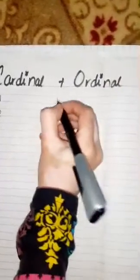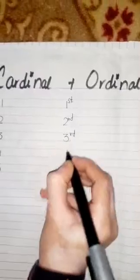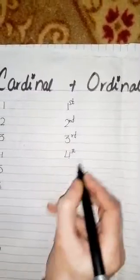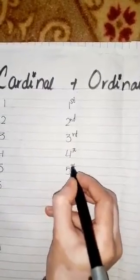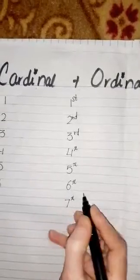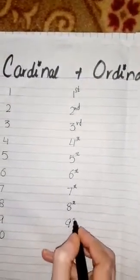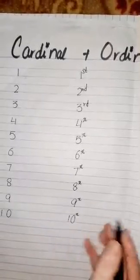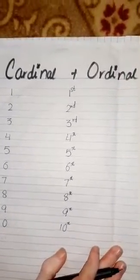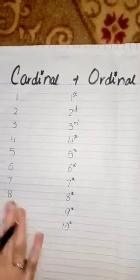Now I write ordinal numbers: first, second, third, fourth, fifth, sixth, seventh, eighth, ninth, and tenth. Before explaining the ordinal numbers, first of all I will explain cardinal numbers.